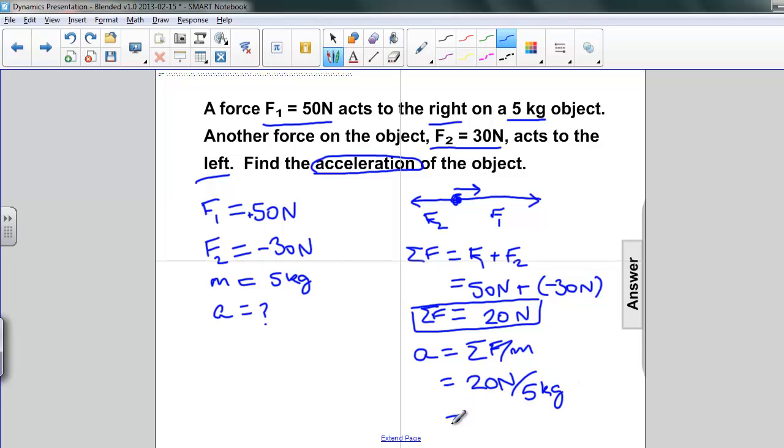So 20 divided by 5 is 4, and newtons per kilogram is the same thing as meters per second squared.